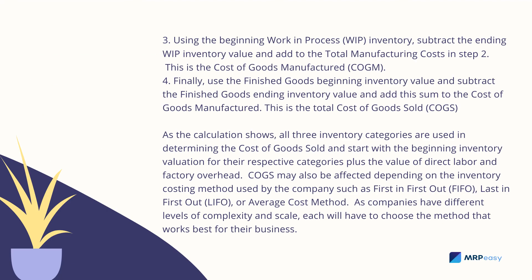Step 3: Using the beginning work-in-progress (WIP) inventory, subtract the ending WIP inventory value and add to the total manufacturing costs from step 2. This is the Cost of Goods Manufactured, COGM.